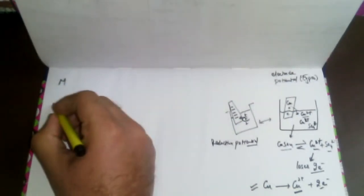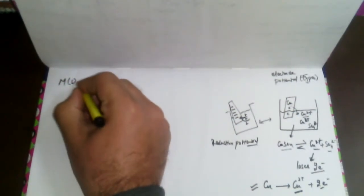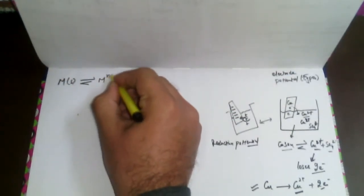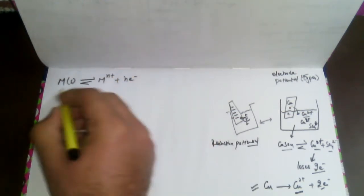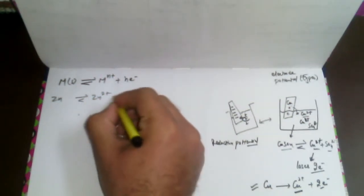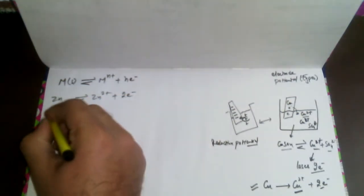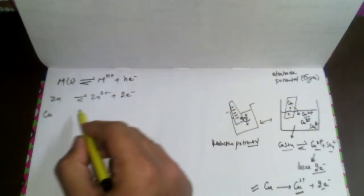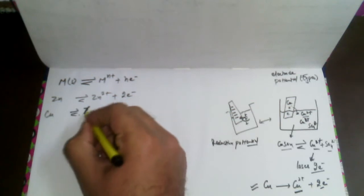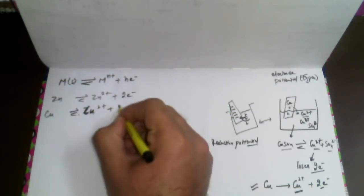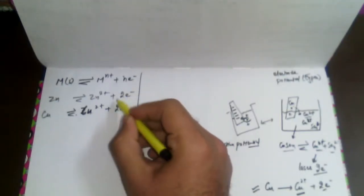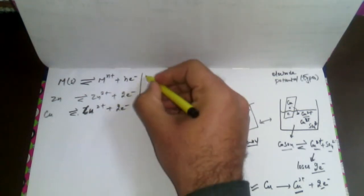If a metal is given to us and placed in solution, oxidation will occur. For example, if a zinc rod is placed in solution, it will lose its electrons — that is the example of oxidation. Similarly, copper placed in solution will decompose into ions. This is the behavior of zinc, copper, or any metal rod — we call this oxidation potential.